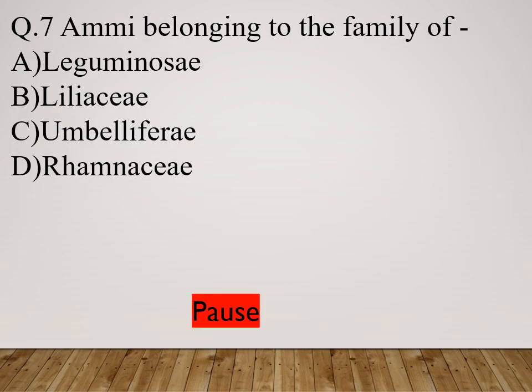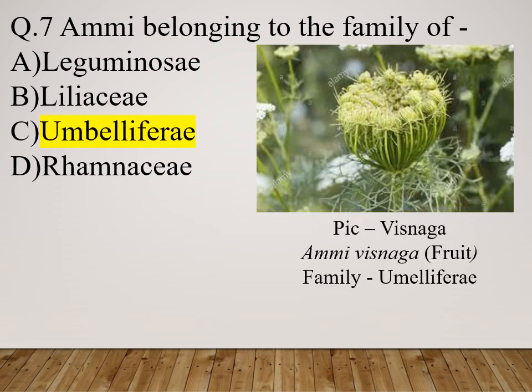Question 7: Ammi belongs to which family? Option A: Leguminosae. Option B: Liliaceae. Option C: Apiaceae (Umbelliferae). Option D: Rhamnaceae. The right answer is Apiaceae (Umbelliferae). The scientific name is Ammi visnaga; the fruit is mainly used and the family is Apiaceae.